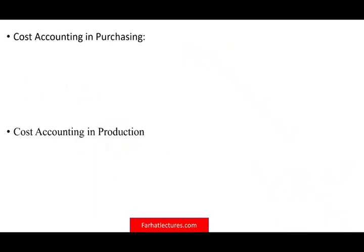Cost accounting also plays a role in purchasing. You have to eliminate any unnecessary steps in the purchasing process, which can be quite complex if you have many suppliers. For example, a company like Johnson & Johnson outsources their purchasing process — they don't handle it themselves. They hire a third party to buy the product on their behalf, because J&J believes that's the most efficient and lowest-cost approach. The point is: eliminate any unnecessary steps.